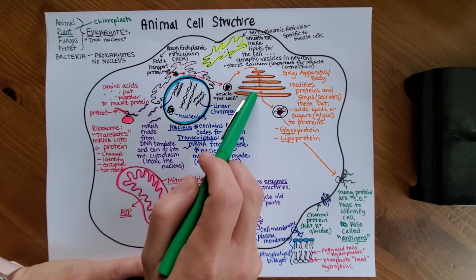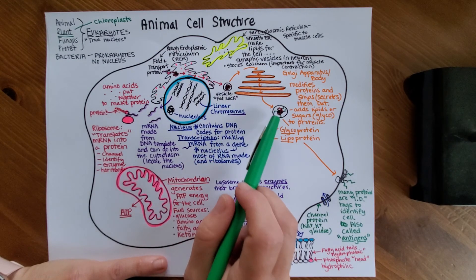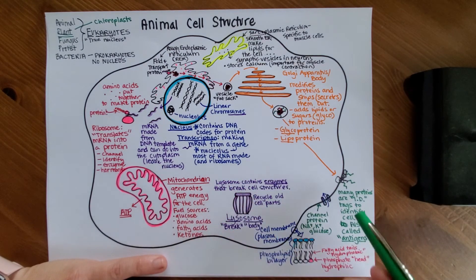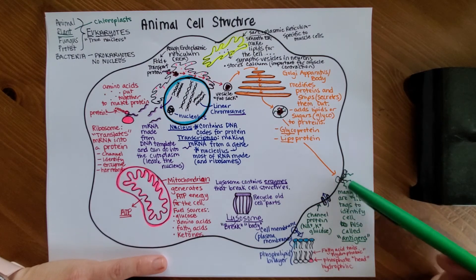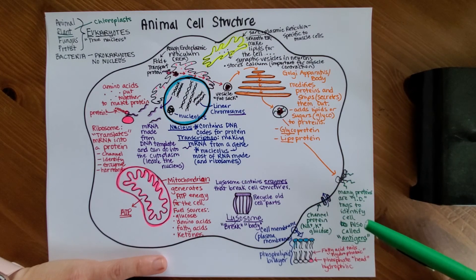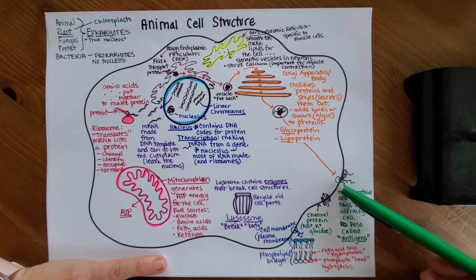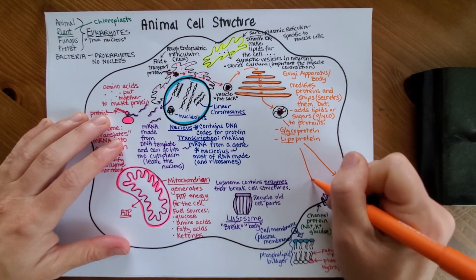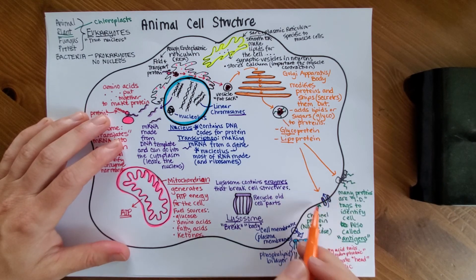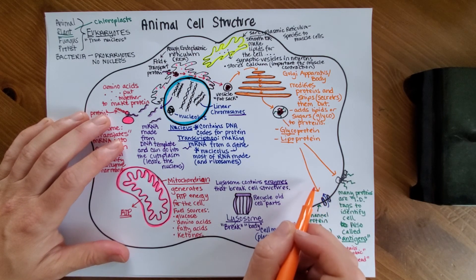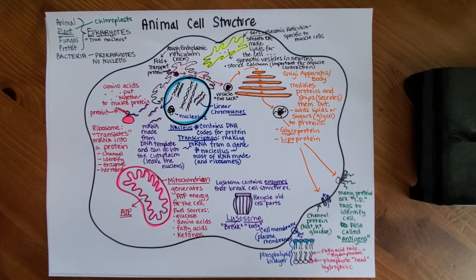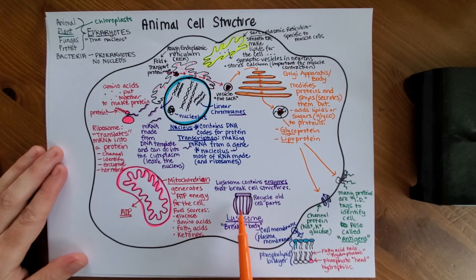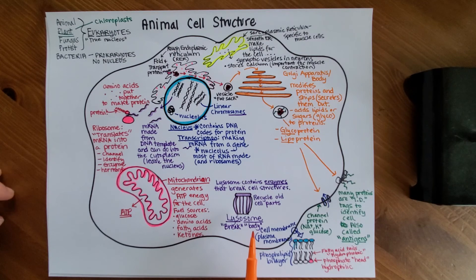As it goes through the Golgi, it will have lipids and or sugars added to it and we put little green on there for that and then get transported to its final destination which I gave you two big examples. One would be on the surface of the cell to kind of identify the cell and we typically call these identifying factors antigens. Another job, we could say it became a channel in the membrane and then you could have sodium coming in here or potassium leaving. When cell parts get old and worn out, then enzymes in the lysosome can break down that old cell structure and recycle it.